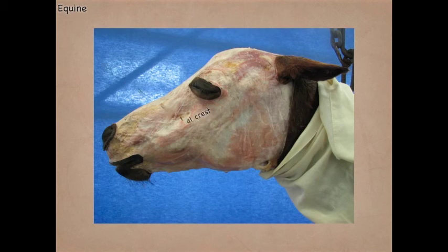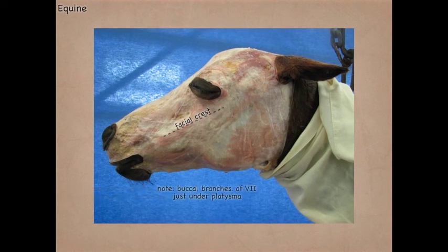We can actually identify the facial crest. You have to be very careful in removing the platysma because the buccal branches of cranial nerve 7 lie just underneath that platysma.